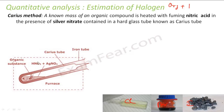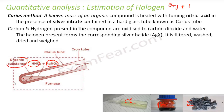So this is my HNO3 nitric acid, this is my silver nitrate, and this is my organic compound. Whatever carbon and hydrogen I had — suppose this compound has carbon, hydrogen, and chlorine — the carbon and hydrogen are oxidized to CO2 and water and we don't care about that. But we have chlorine, and we have AgNO3, which reacts with my chlorine.